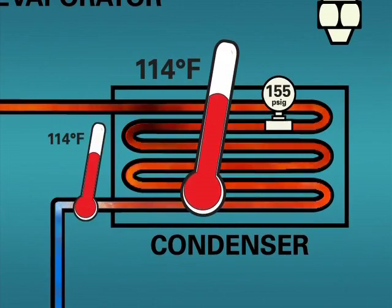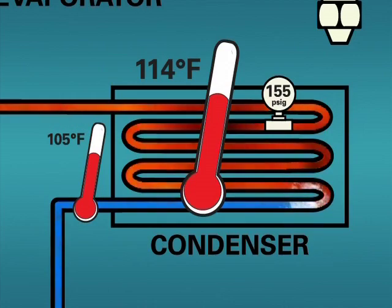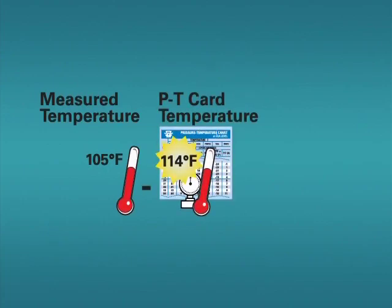If 114 degrees Fahrenheit is measured at the condenser coil outlet, we know the refrigerant is still saturated, and we likely have a liquid and vapor refrigerant mixture entering the liquid line. However, our actual measured temperature in this case is 105 degrees Fahrenheit. Because this temperature is lower than our saturated temperature, we know the refrigerant at this point is subcooled liquid. To determine the amount of subcooling, simply take the difference between the measured temperature and the saturated temperature indicated by the PT card. In this case, the difference between 114 degrees Fahrenheit and 105 degrees Fahrenheit is 9 degrees Fahrenheit subcooling.